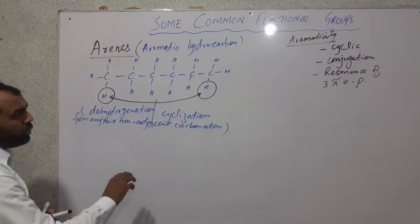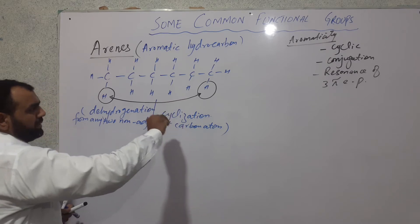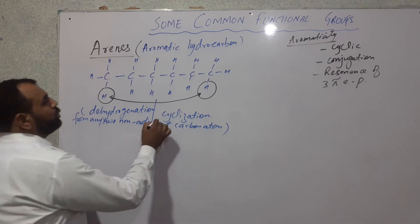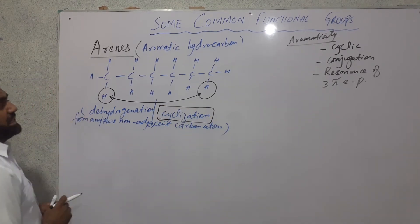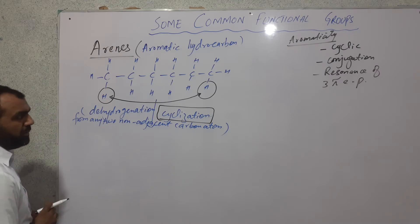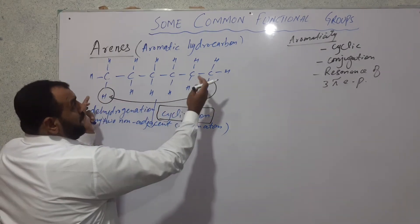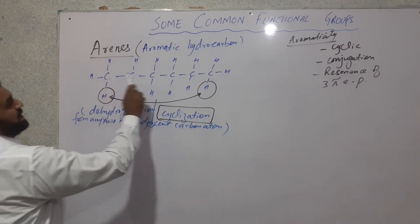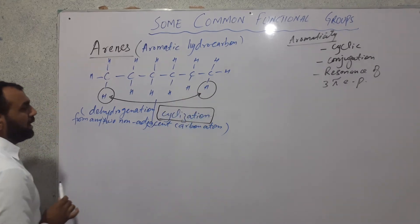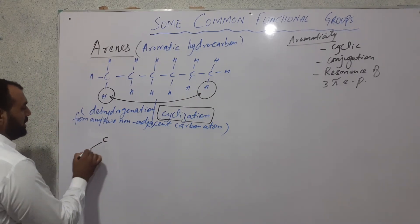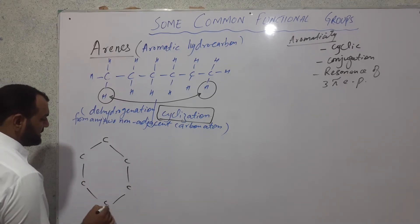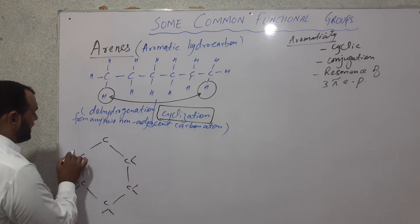The process in which you remove hydrogen molecules from non-adjacent carbon atoms to convert an open chain compound into a closed chain compound is called cyclization. Remember, the number of carbon atoms that link together determines the geometry of the resulting ring. With six carbon atoms, linking carbon one and six gives a six-carbon geometry: one, two, three, four, five, and six.